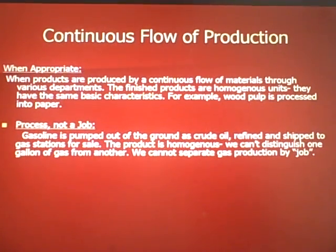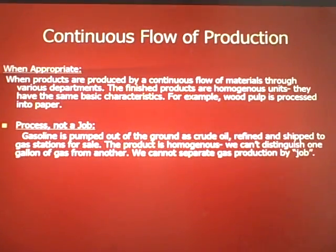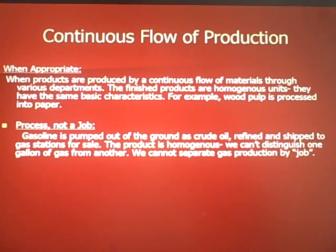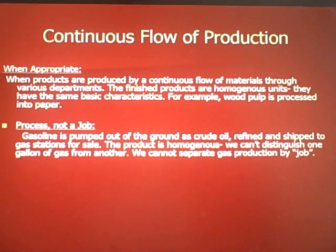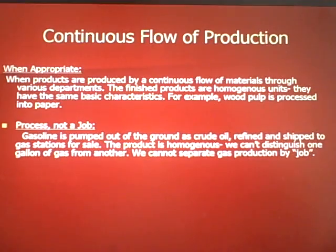Gasoline is another good example. Gasoline is pumped out of the ground as crude oil. We send it to a refinery. We ship it to gas stations. The product is homogeneous — we can't distinguish one gallon of gasoline from another. We can't separate gas production by job, so as a result, we can't cost the product that way.